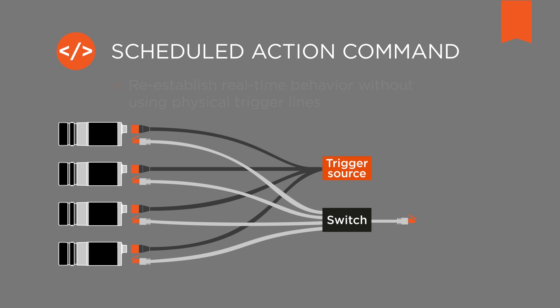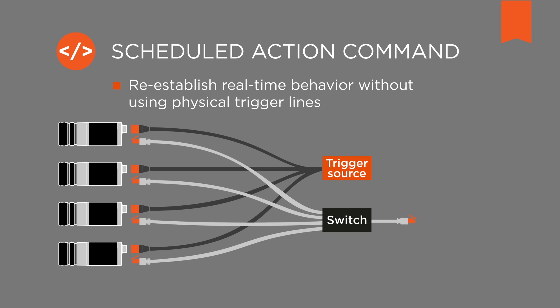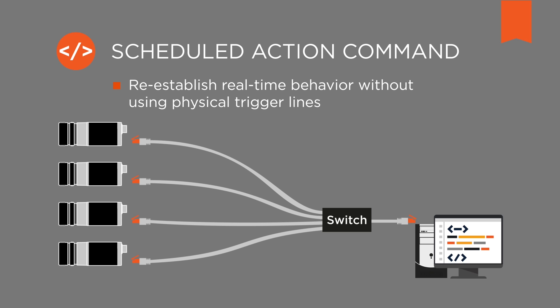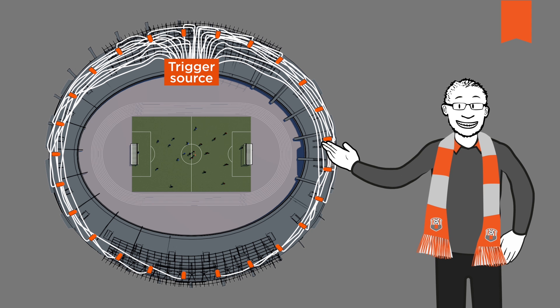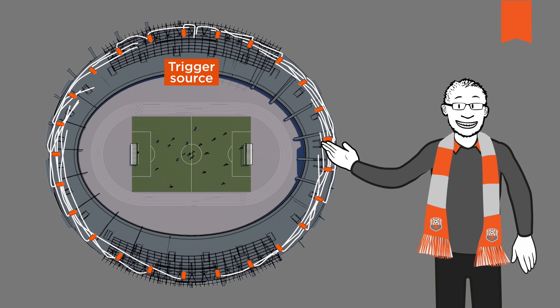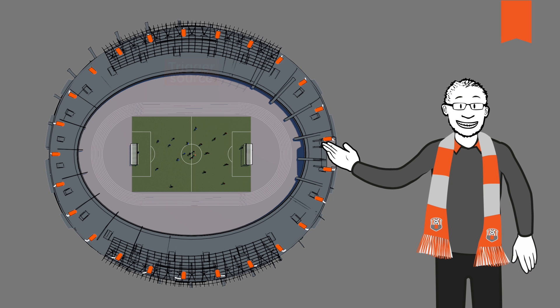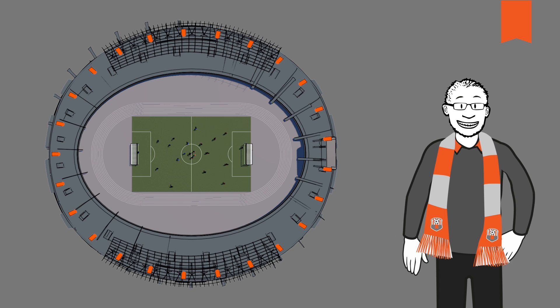The scheduled action command helps to re-establish real-time behavior without using physical trigger lines. For our soccer example, this means that you don't need hundreds of meters of trigger cables anymore.